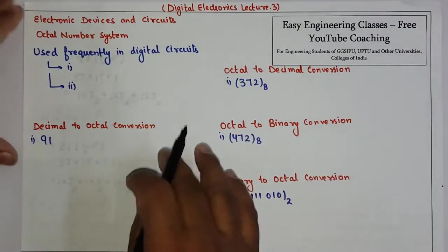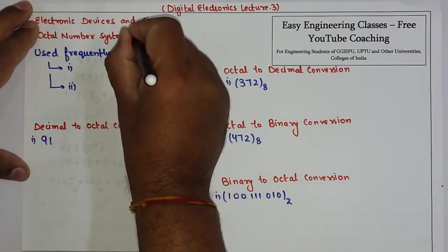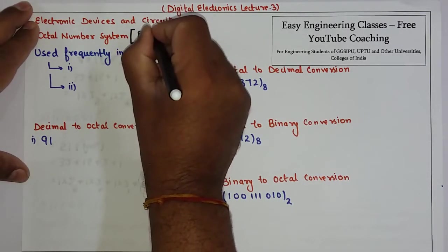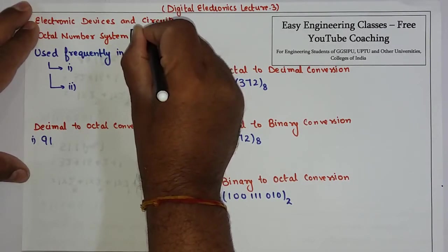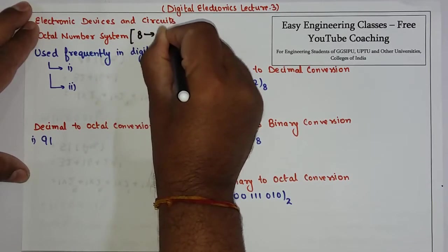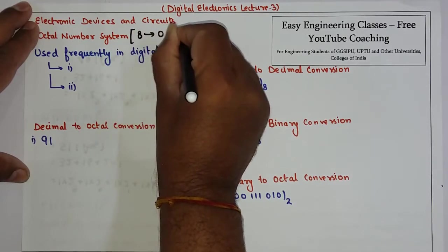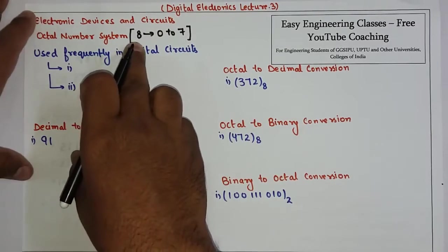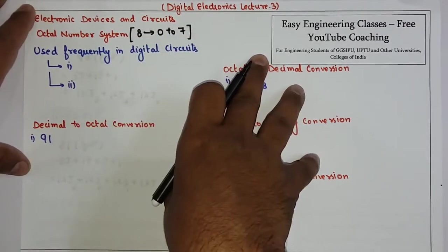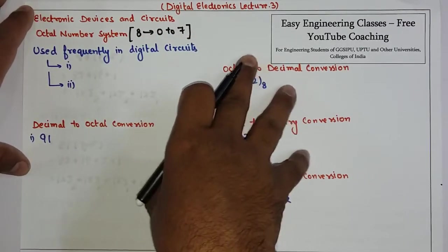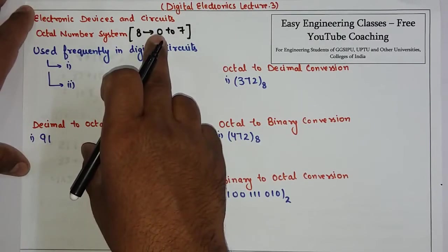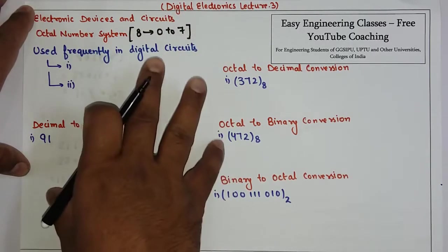The octal number system has a radix or base equal to 8, and it uses 8 digits from 0 to 7. So the base or radix is 8 — like binary has base 2 and decimal has base 10 — and the digits range from 0 to 7.